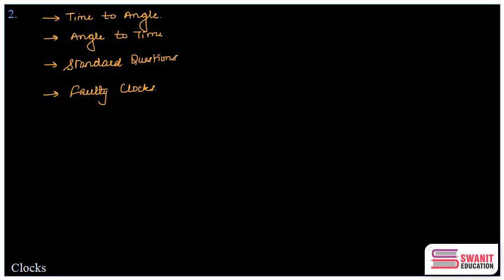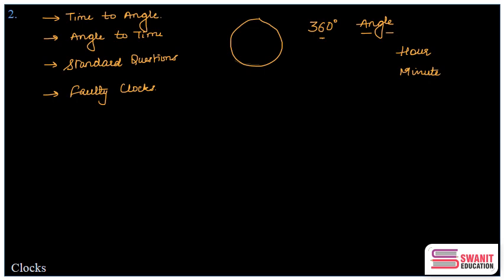Before we start with the time-to-angle concept, let's understand the basics. The entire circle of a clock is 360 degrees. A clock also has three needles: the hour hand, the minute hand, and the thinnest — the second hand. Out of these three, the majority of questions involve the hour and minute hands. So let's talk about these two needles and their speed with respect to time.